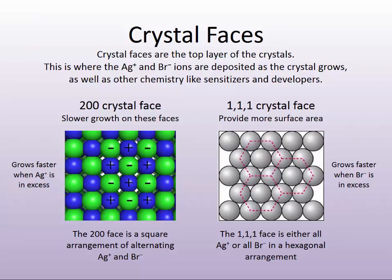Plates are very important because they provide a lot of surface area — surface area for photons, which translates into exposure. And they provide surface by which we can deposit chemistry: sensitizers, developers, and some of the chemistry that we'll talk about a little bit later.